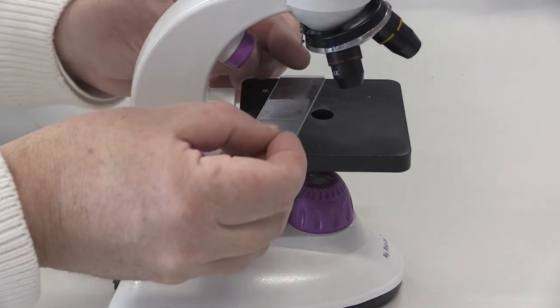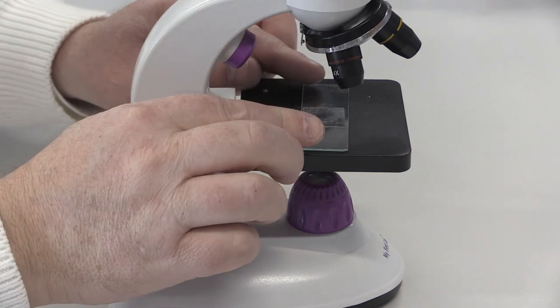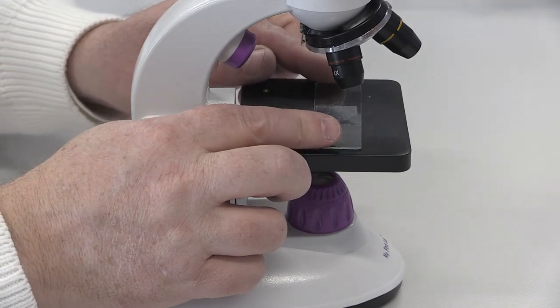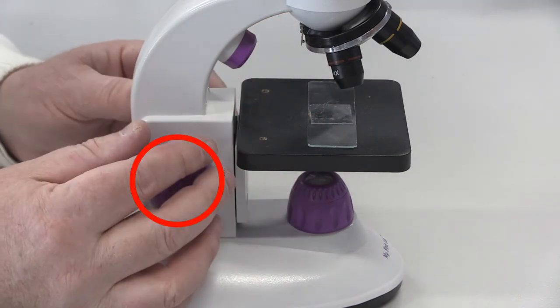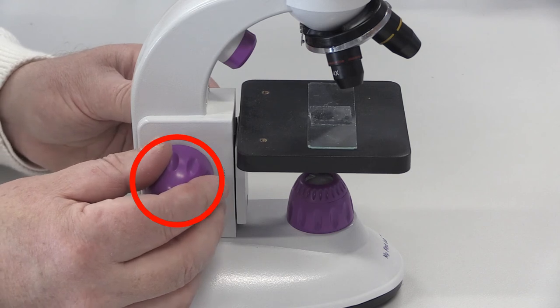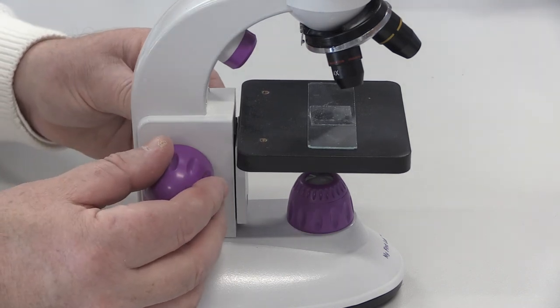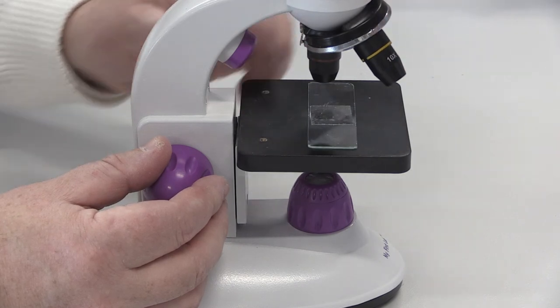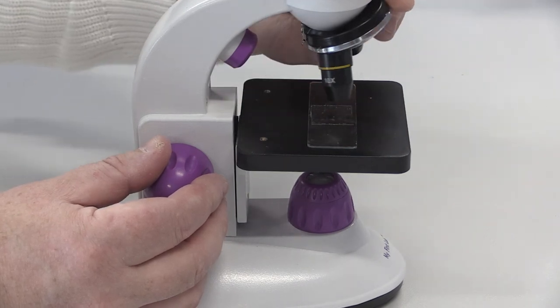When using the microscope, gently touch the edges of your slide to move it around to explore the sample. Make sure you adjust the focus as you go. You can change the magnification by rotating the objective lens around. Be careful you don't bump your sample when doing so.